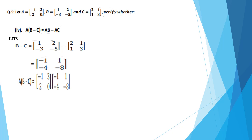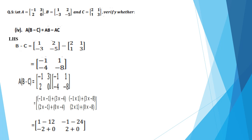Now multiply the resultant value with A. First row with first column: minus 1 multiply minus 1, plus 3 into minus 4. First row second column: minus 1 multiply 1, plus 3 multiply minus 8. Second row: 2 multiply minus 1, plus 0 multiply minus 4. Second row second column: 2 multiply 1, plus 0 multiply minus 8. Multiplying: minus 1 times minus 1 is plus 1, plus 3 times minus 4 is minus 12; minus 1 times 1 is minus 1, plus 3 times minus 8 is minus 24; 2 times minus 1 is minus 2, plus 0 times minus 4 is 0; 2 times 1 is 2, plus 0 times minus 8 is 0.